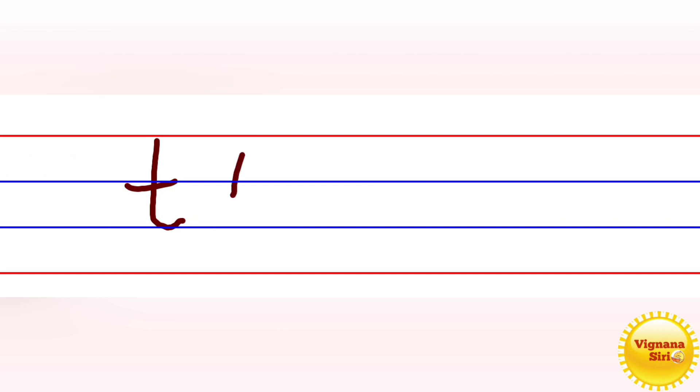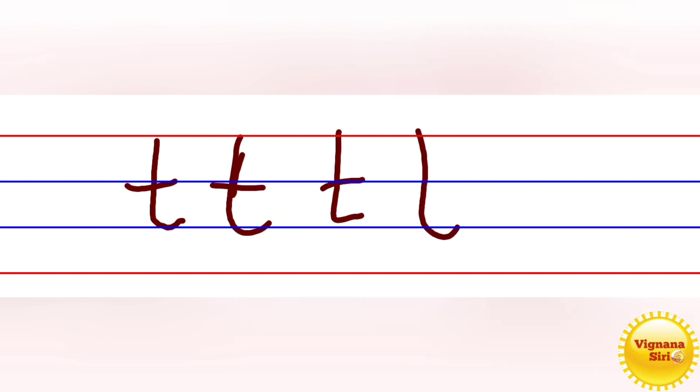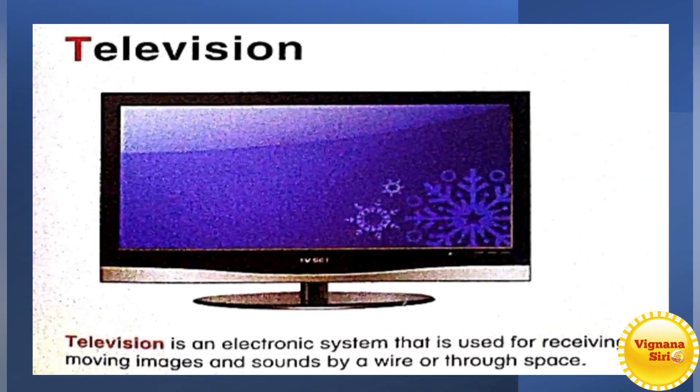Now we will see how to write in the four grid line book. The first three lines — the standing line with a curve should be there. And the sleeping line should be in the middle, at the second blue line. Like this, you have to write the small letter T in the first three lines. The sleeping line should be at the second line.